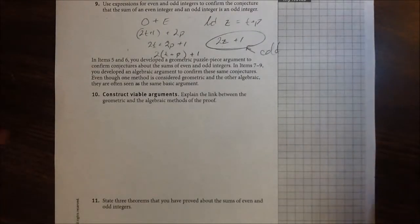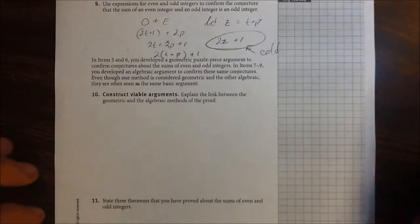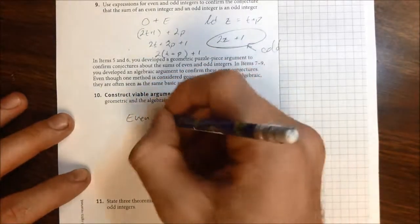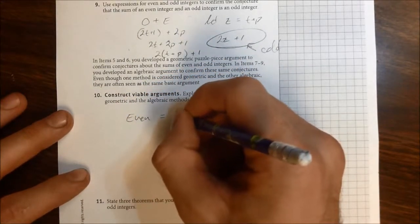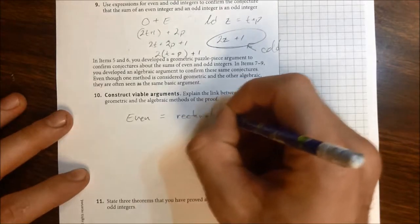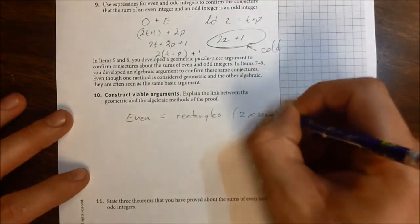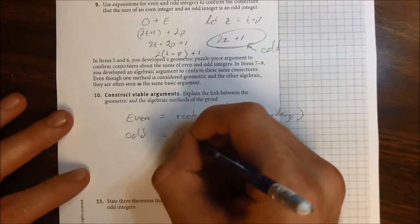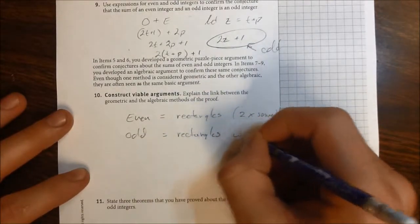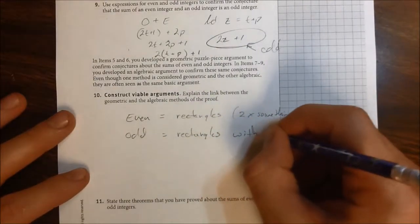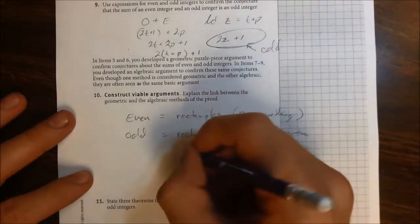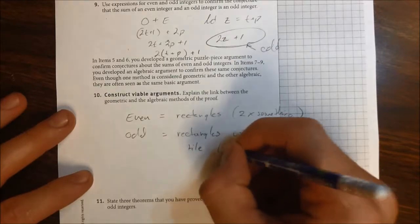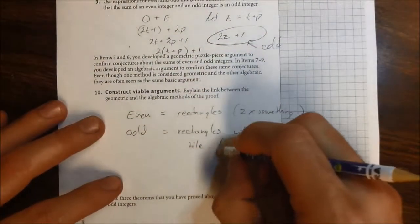I mean, I literally just talked about it. That an even is the rectangles, the 2 by something rectangles, whatever that something is, and the odd was those same rectangles with an extra tile, or they called them puzzle piece, or whatever. So that was that, that was that plus 1 in the algebraic.